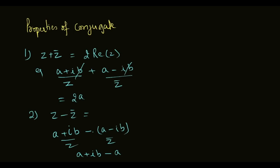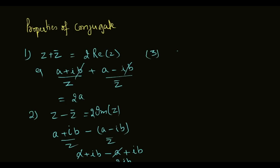When we subtract z-bar from z, the real parts cancel and only the imaginary part remains. So z minus z-bar equals 2 times iota b, that is 2 times the imaginary part of z.